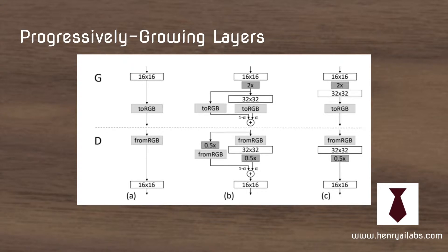With the new layer — it's kind of like a highway network where you can split the intermediate results — you take the intermediate output, upsample it with 2x nearest neighbor, and also send that input to the new layer for it to train, learn, and output its own image. Then you weight each of these images with an alpha parameter and combine them into the new output. This is like a mirror image of how the discriminator is trained as well.